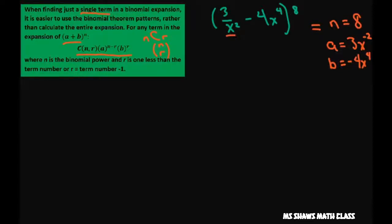So when we get started we're going to write it like this. We're going to write n choose r. So that's 8 choose r because our n is 8. My a is 3x to the negative 2 and my n is 8, so that's 8 minus r. And then my b is negative 4x to the fourth. And then this is to the r power.